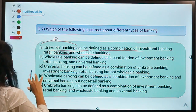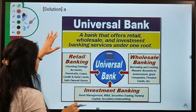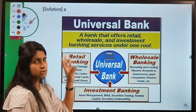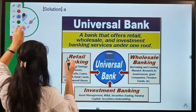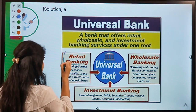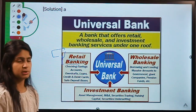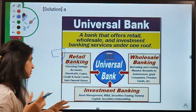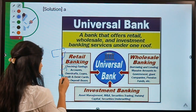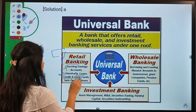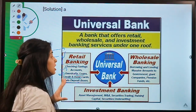Before learning about universal banking, let's learn about its components. You can clearly see in the picture that universal banking has three components. Number one is retail banking — banking services provided to retail customers like you and me, basically to small investors. It includes providing savings accounts, checking account services, overdraft services, basic loans, credit and debit cards, and safe deposit boxes.